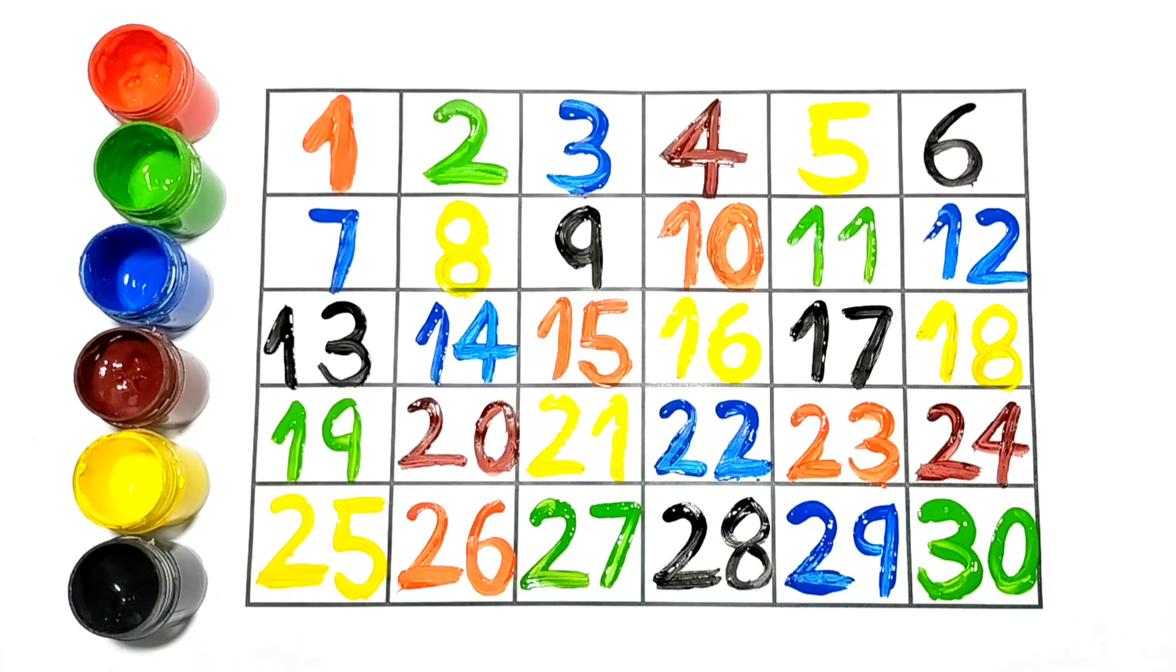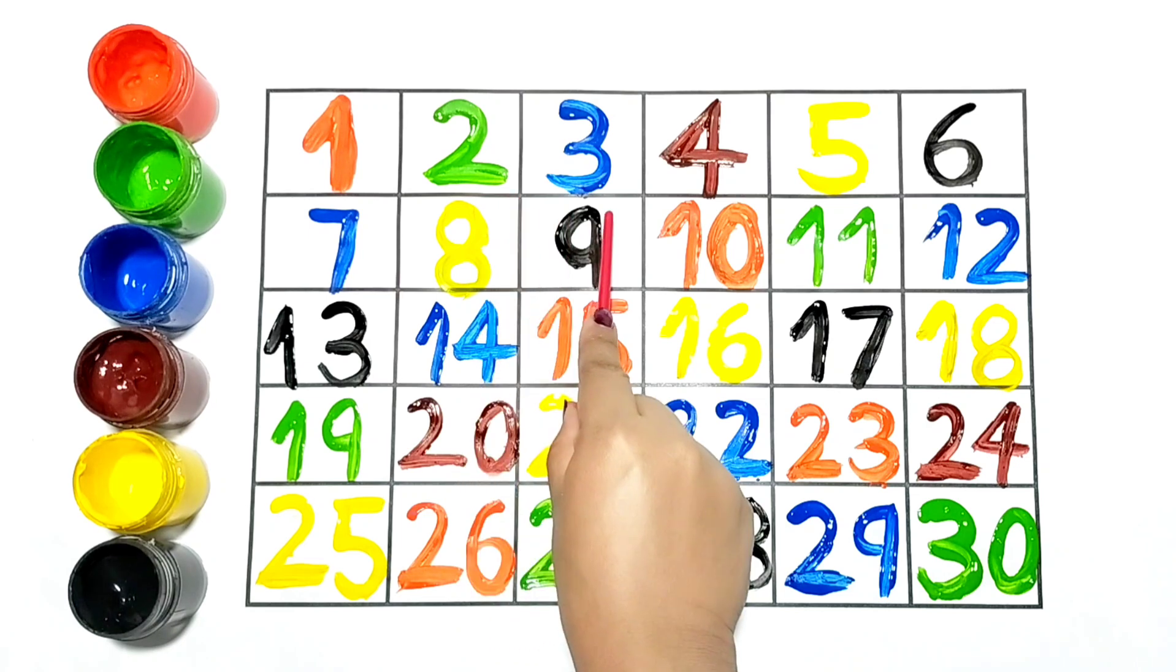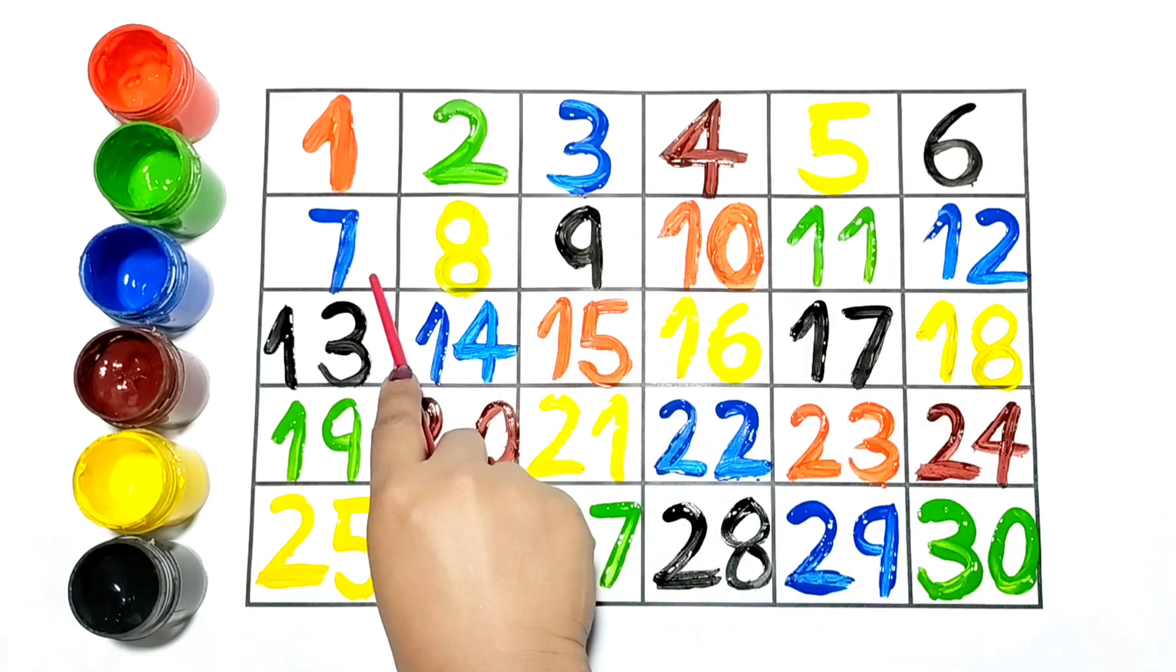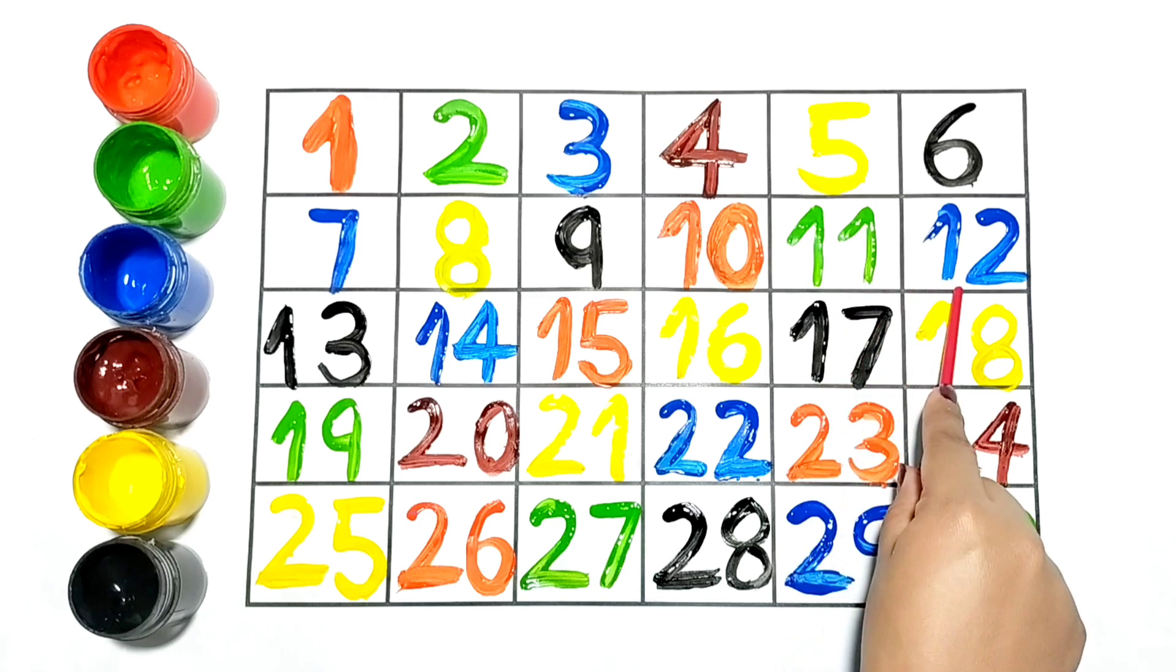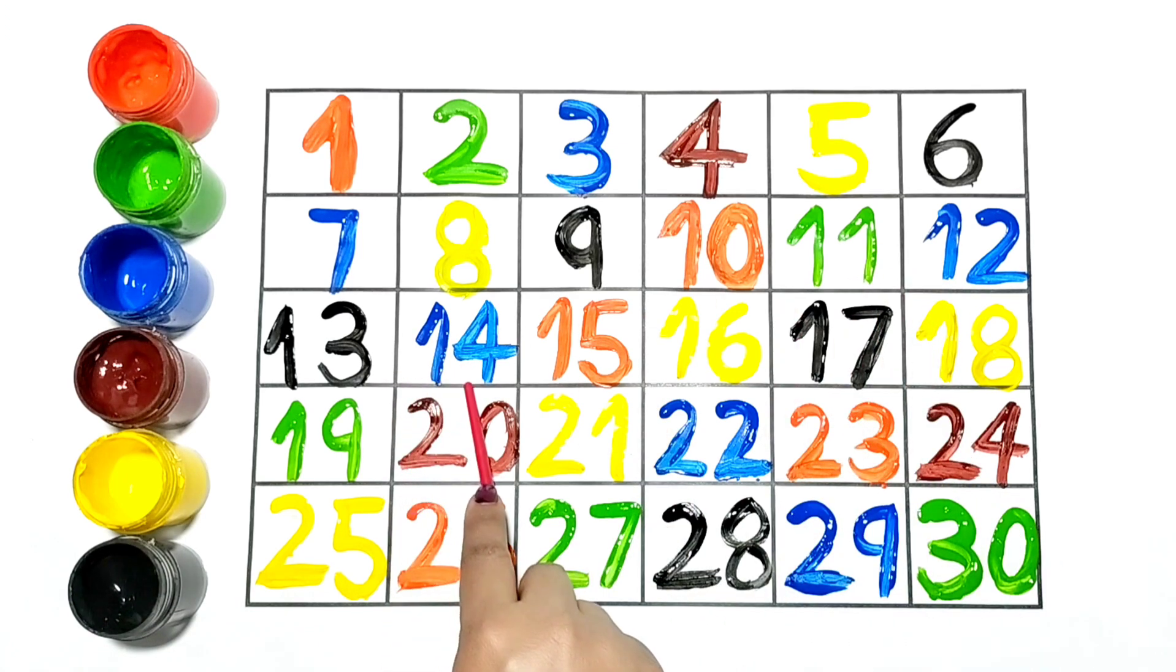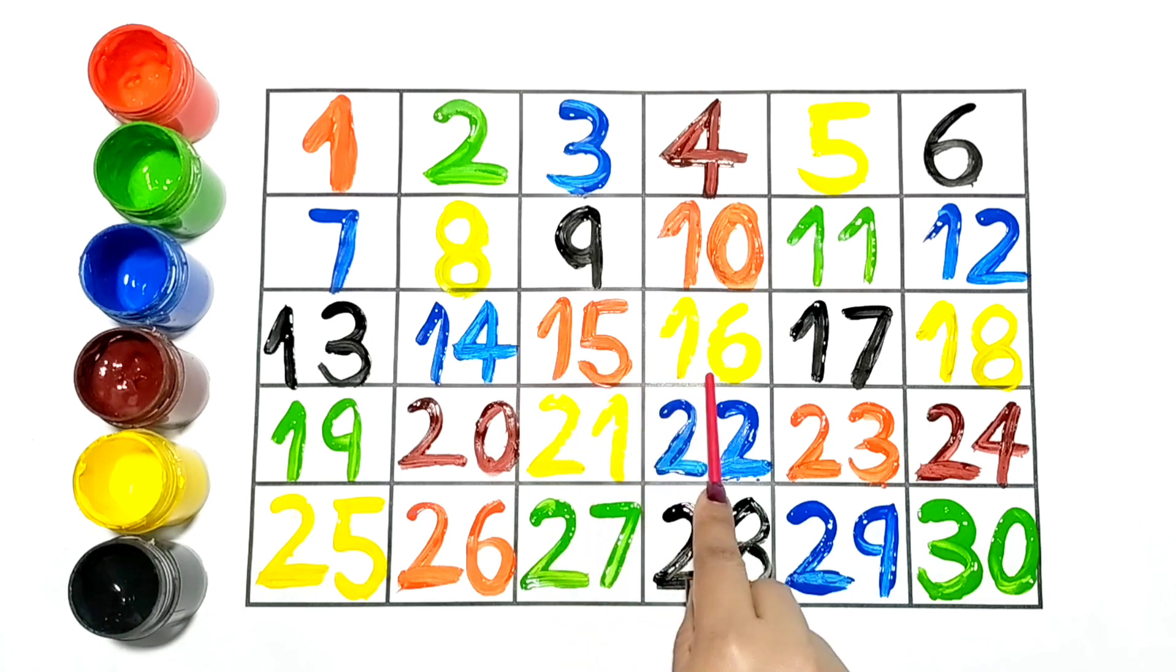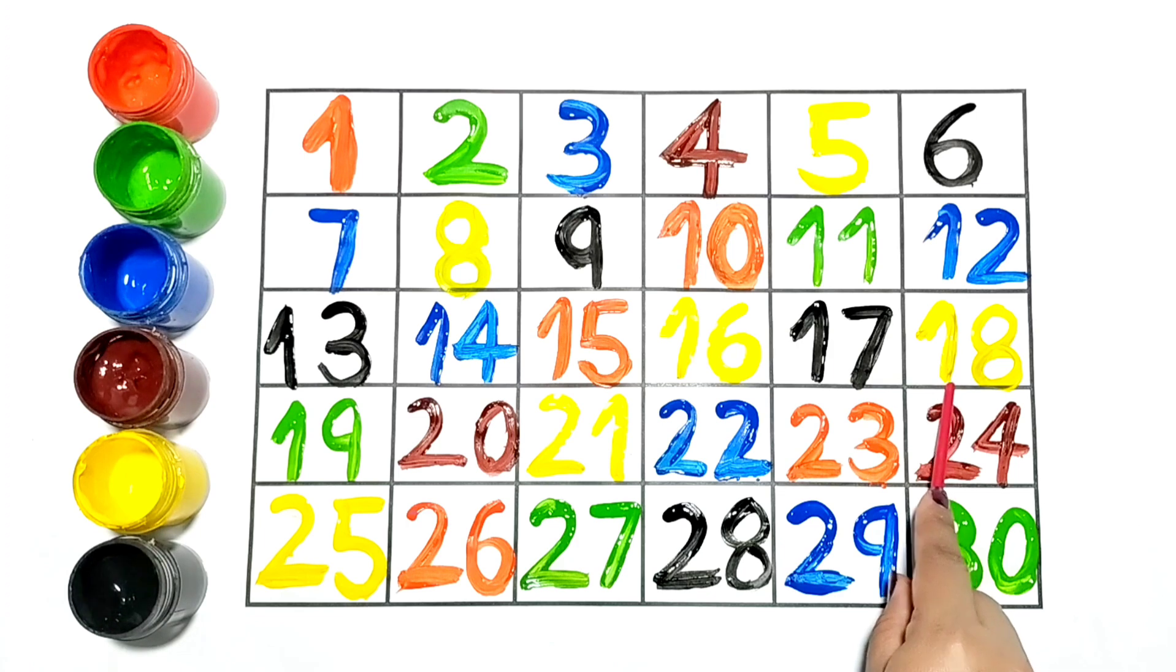Let's repeat. 1, 2, 3, 4, 5, 6, 7, 8, 9, 10, 11, 12, 13, 14, 15, 16, 17, 18, 19, 20, 21, 22, 23, 24, 25, 26, 27, 28, 29, 30.